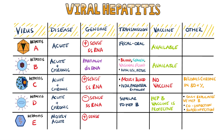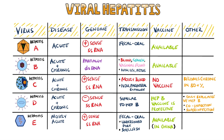It's a single-stranded positive-sense RNA virus. Hepatitis E is transmitted via the fecal-oral route, often from eating undercooked pork or shellfish, and a vaccine against hepatitis E is available in China.